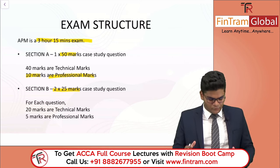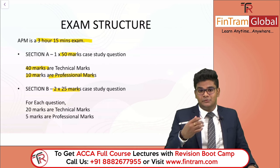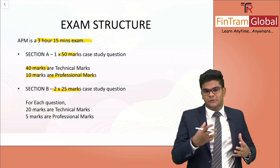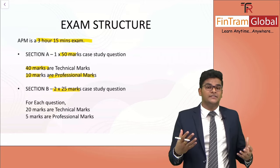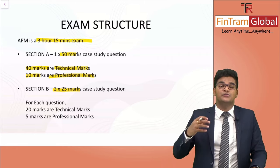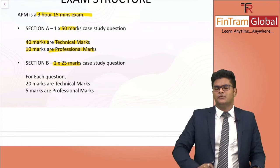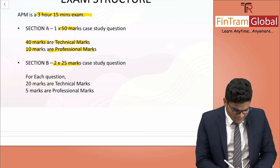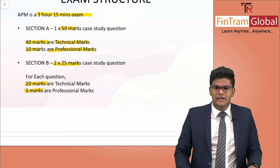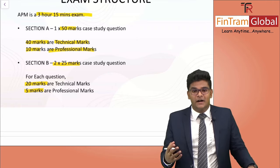The professional marks can be in relation to various professional skills such as communication or evaluation. There are also 40 technical marks, which is still relevant — our focus should not only be constrained to the professional marks. Remember, you don't have to write something additionally to get these professional marks. It's all about the entire way of presenting your answer to the examiner. Moving on to Section B — for each 25-mark question, we have 20 marks as technical marks and 5 marks as professional marks. So in Section B, you have a total of 10 marks available as professional marks and 40 marks as technical marks.